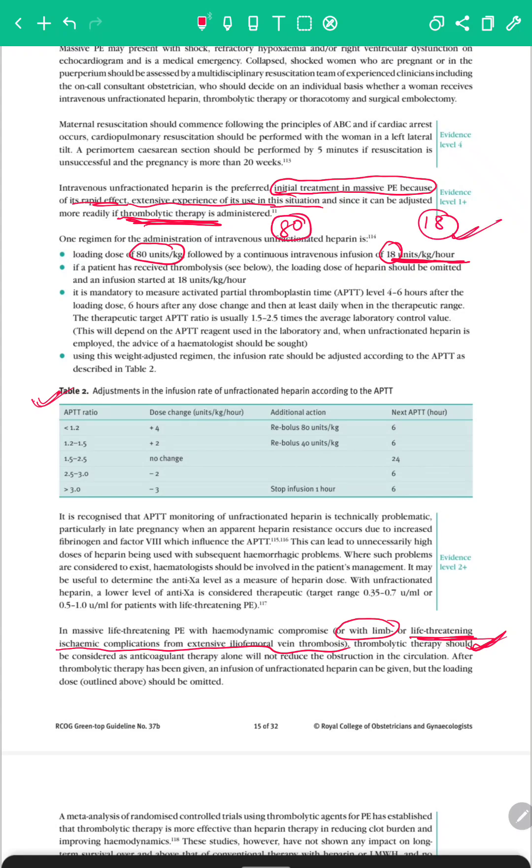Now what we have to know is how are we going to adjust the doses according to the APTT of the patient. Now we all know that APTT has to be measured every 6 hours until it is in the desirable range, when it can be measured 24 hourly. Till we have it in the desirable range, we have to measure APTT every 6 hours.